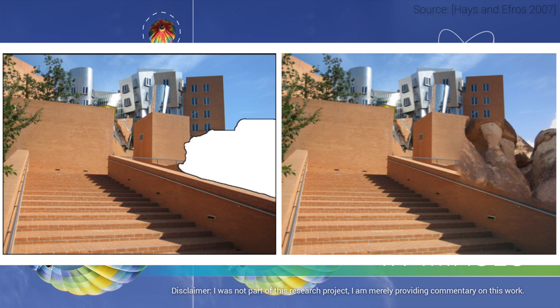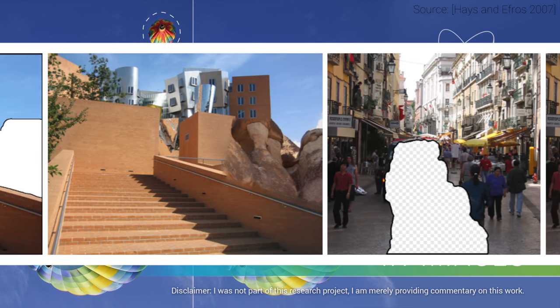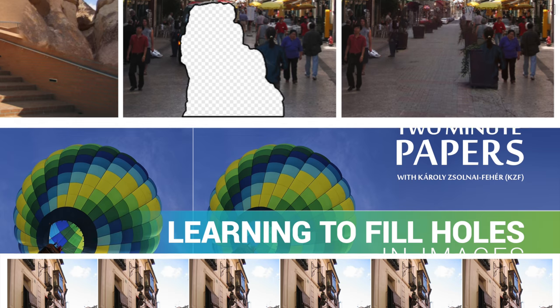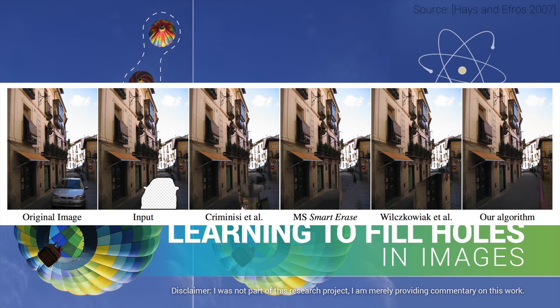The paper also discusses some of the failure cases, which arise mostly from the lack of high-level semantic information. For instance, when we have to finish people, which is clearly not what this technique is meant to do, unless it's a statue of a famous person with many photographs taken in the database.